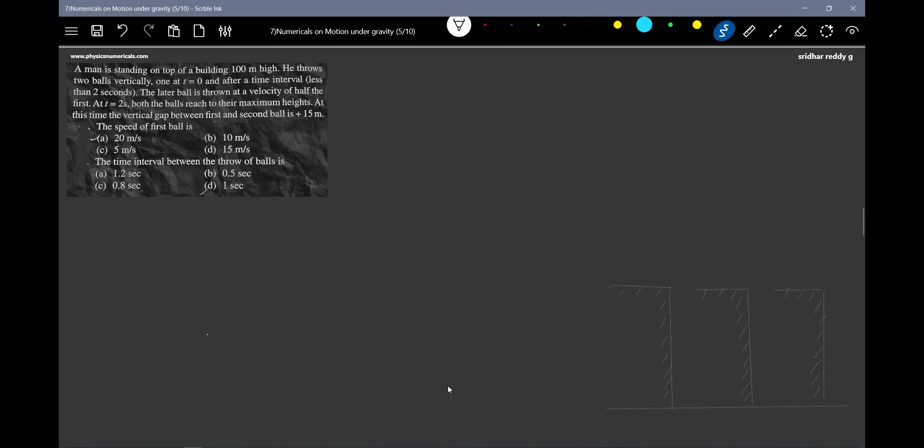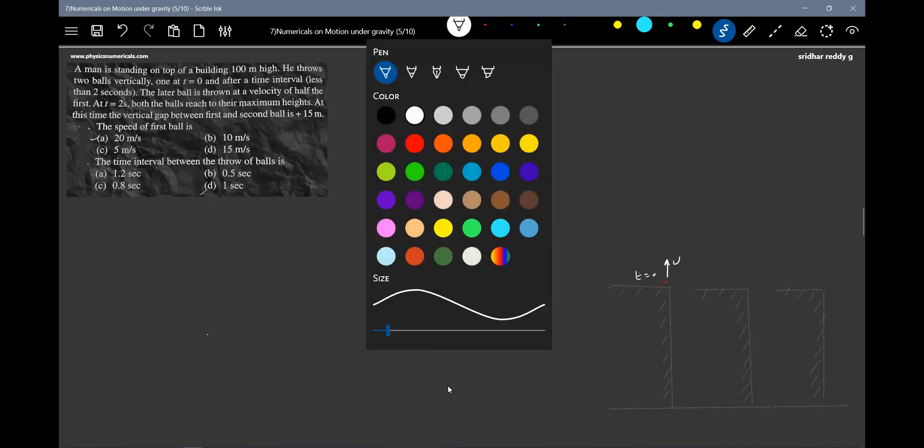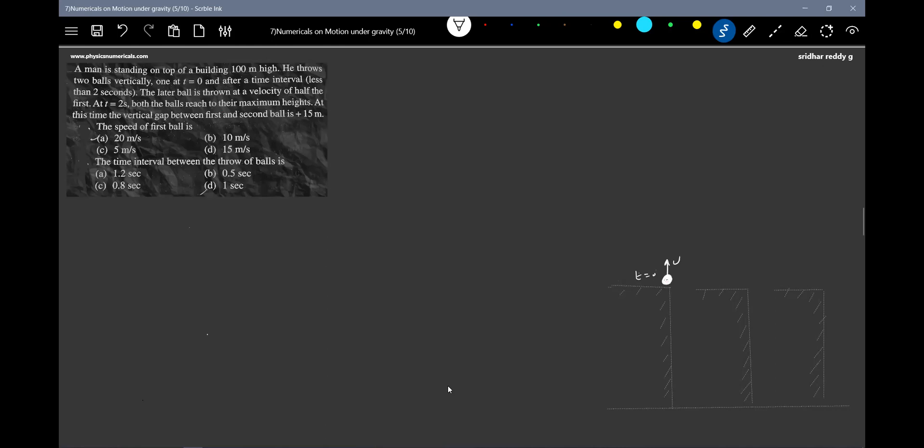This is the first ball, which I'm going to throw with speed u. Ball A it is. This is at t equal to zero. Then the second ball I'm going to throw, ball one. This is the second ball, I'm going to throw it with the velocity of half of the first ball.